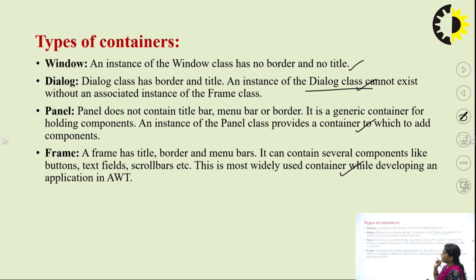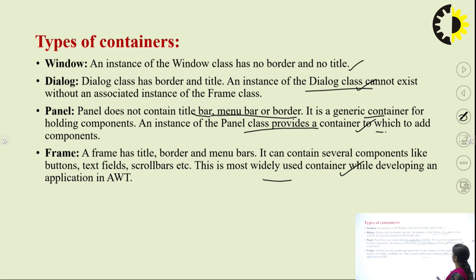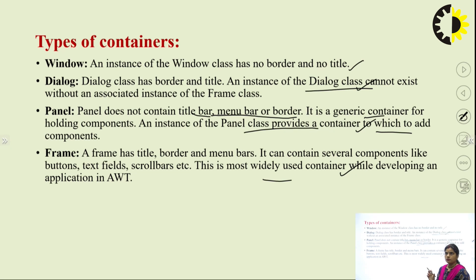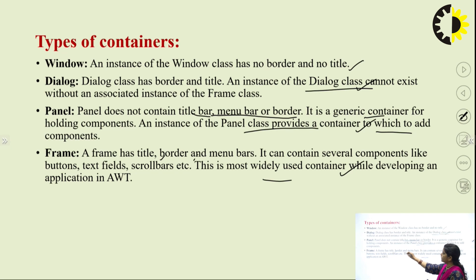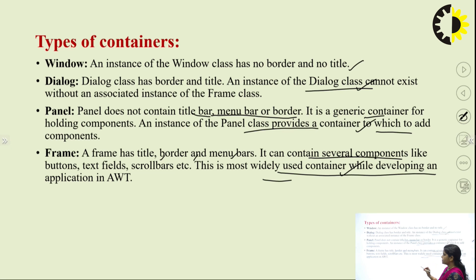The panel container does not contain a title bar, menu bar, or border. It is a generic container that holds components of Java AWT and provides a container to which you can add components. The frame is the most popular container, used widely in making APIs or window-based applications, because it has a title bar, border, and menu bar, and it can contain buttons, text fields, scroll bars, and checkboxes.